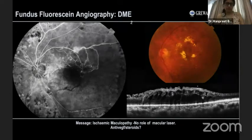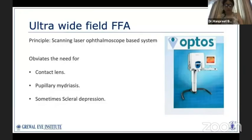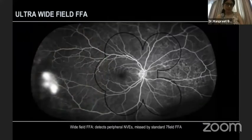To summarize, FFA is a gold-rate-based sign to identify the type of DME to guide treatment. Moving on to ultra-wide field fluorescein angiography: traditional fundus photography FFA captures around 75 degrees of your field, whereas with ultra-wide field you can visualize up to 200 degrees. Thus, peripheral NVEs which are usually missed by traditional FFA can be easily picked up.